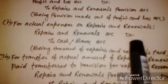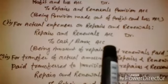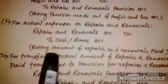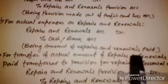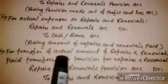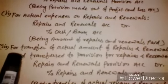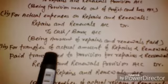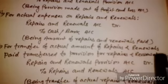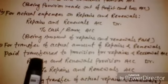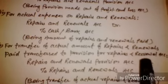The second journal entry is for actual expenses on repairs and renewals: Repairs and Renewal Provision Account — Debit, to Cash or Bank Account — Credit, being the amount of repairs and renewals paid.